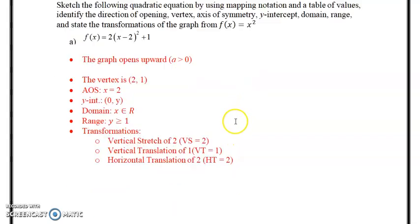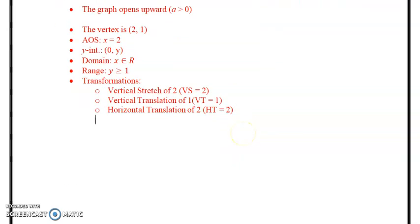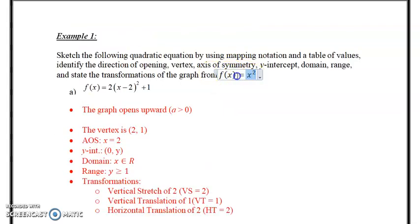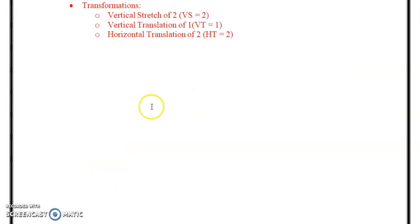Next, what we're going to do is we're going to create a table of values using the original graph and the transformed. So some key points for the original quadratic. I'll do that in the black. So remember, our original function is f(x) = x². That's the base function of the parent graph.